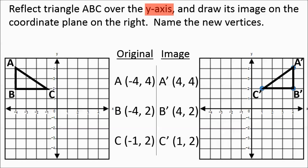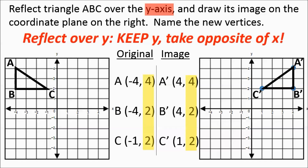When reflecting over the y-axis, notice how the y-value stays exactly the same and for the x-values, all we did was take the opposite of them. So when reflecting any point over the y-axis, you keep the y-value and take the opposite of x. Let's go ahead and do another one.